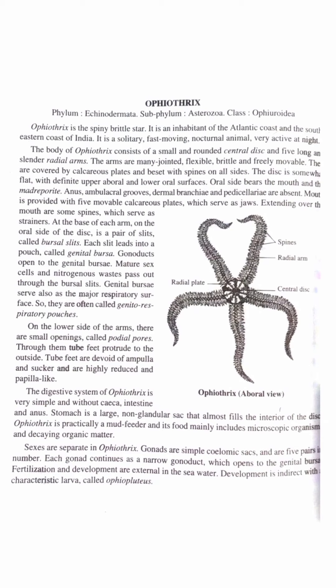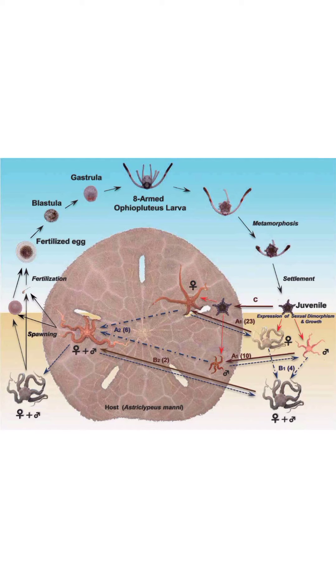At the base of each arm on the oral side of the disc is a pair of slits called bursal slits. Each slit leads into a pouch called the genital bursa. Gonoducts open to the genital bursa. Mature sex cells and endogenous waste pass out through the bursal slits. Genital bursae serve also as the major respiratory surface.